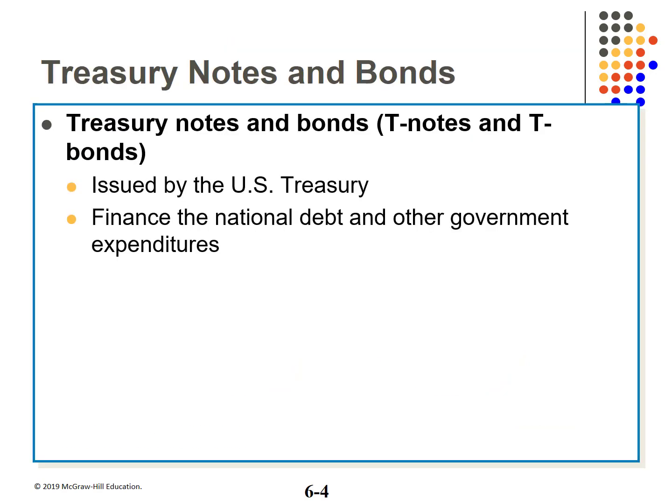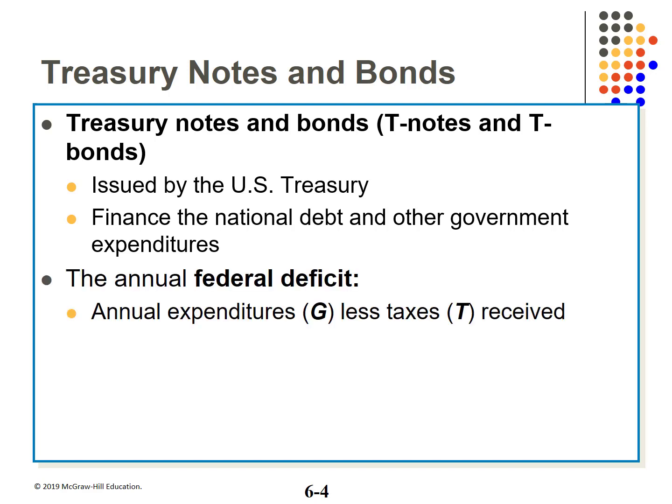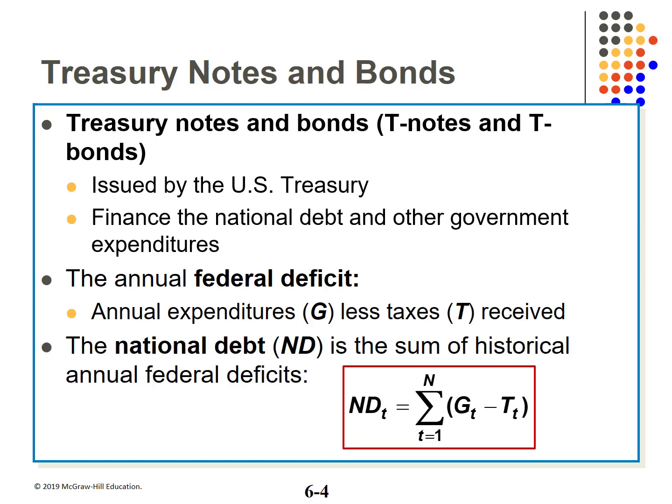Let's start with treasuries — notes and bonds. We covered T-bills with money markets. Treasury notes and bonds are issued by the U.S. Treasury and used to finance the government. The annual deficit is simply expenditures minus taxes collected. The national debt, which is $26.5 trillion as of June 2020, is the sum of annual deficits.